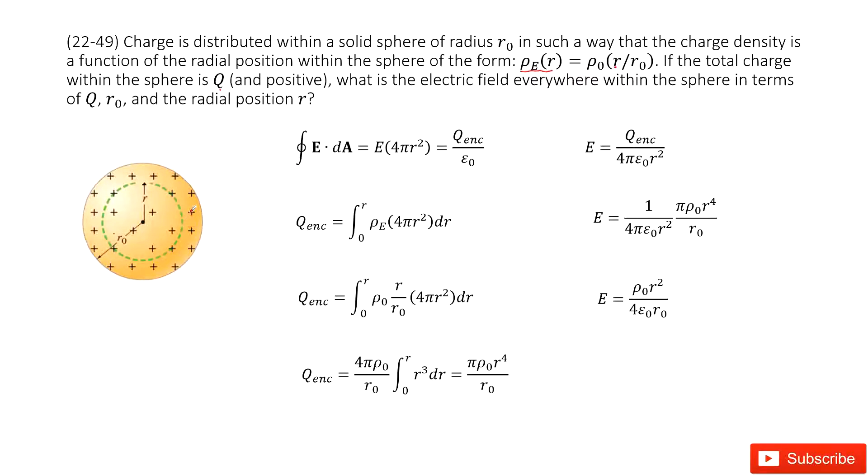So there we use Gauss's law. We can see we can draw a Gaussian surface like this one with radius R. We use electric field times Gaussian surface equal to enclosed charge divided by epsilon naught. Now we can write the function like this. The electric field is enclosed charge q divided by 4 pi epsilon naught R squared.